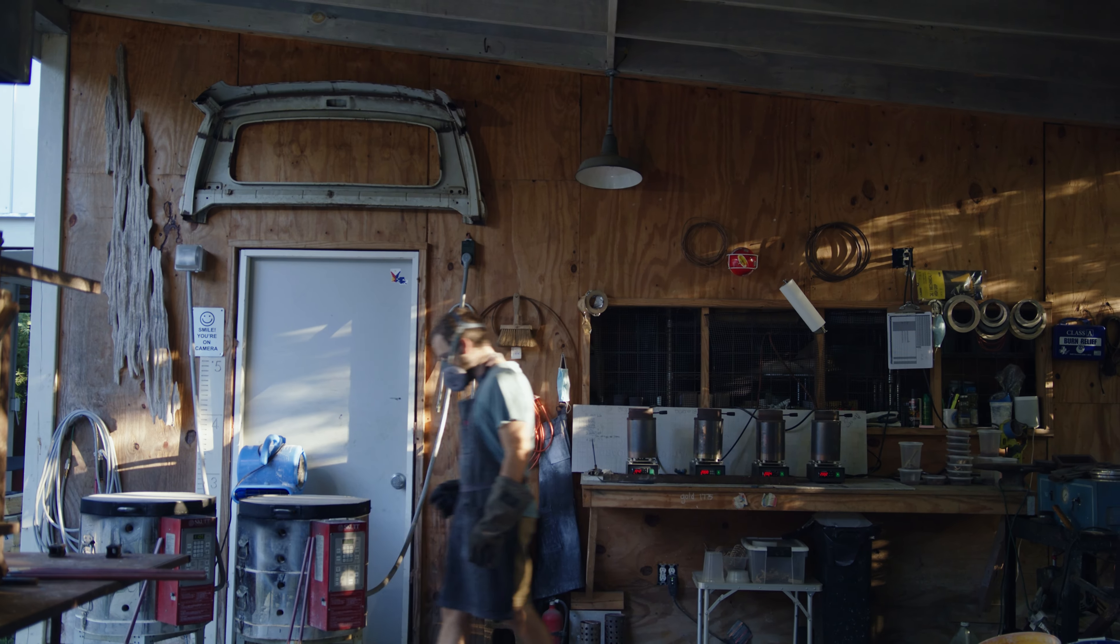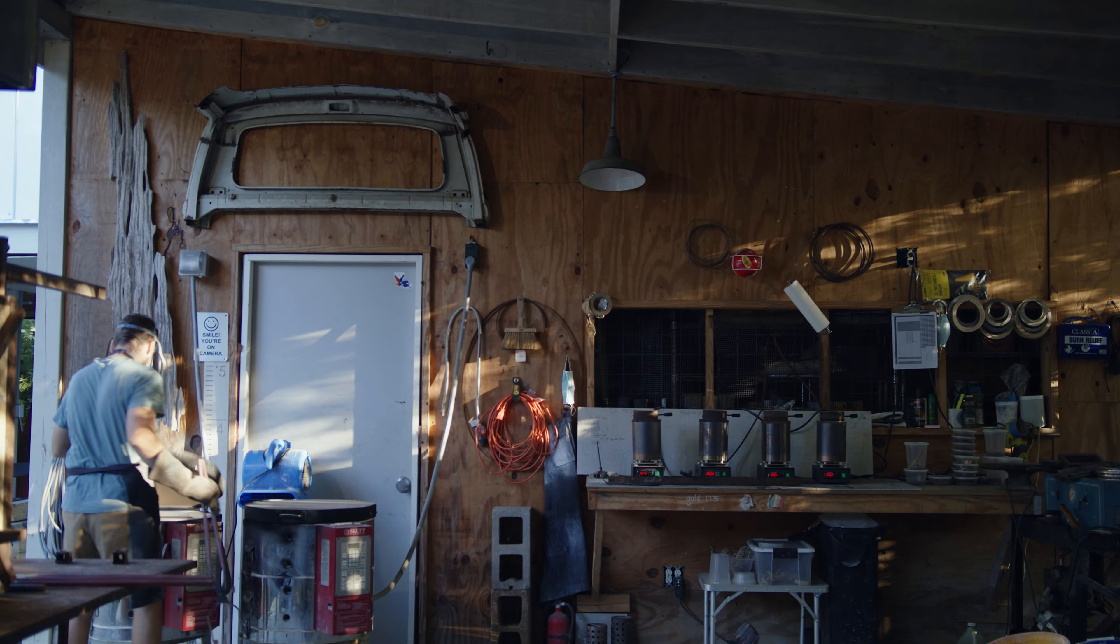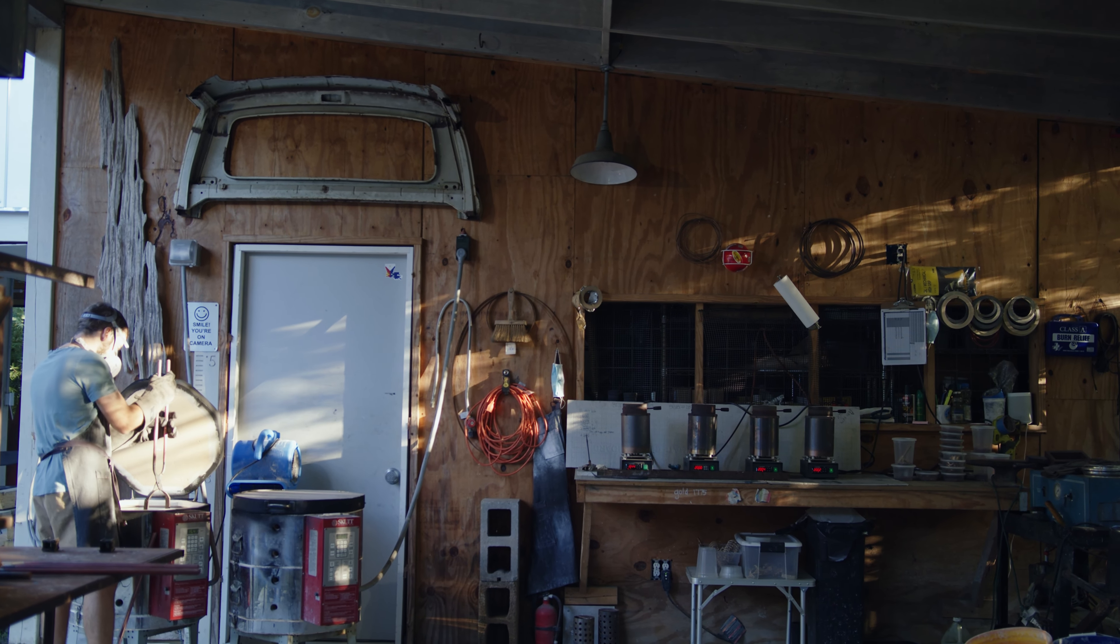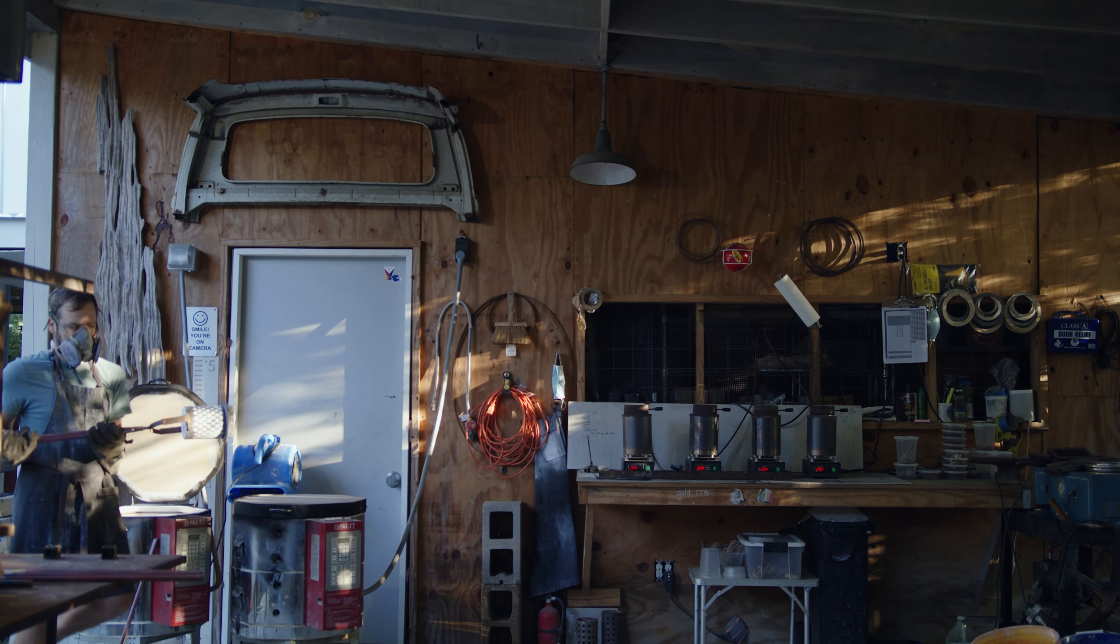The flask is placed upside down into a kiln to burn out the wax tree inside. This is the lost wax part where a void is created for pouring in the molten metal.